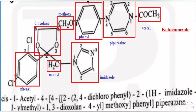Dear students, now we are going to see the synthesis of ketoconazole. What is the structure for ketoconazole? It is an azole antifungal agent. The azole present here is called imidazole. The parent ring is called piperazine.